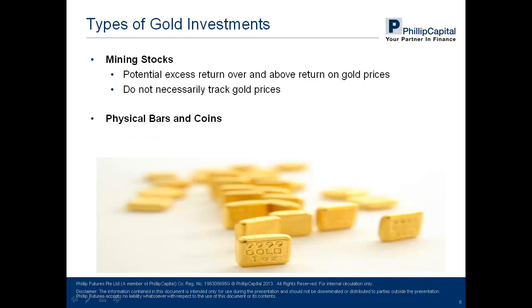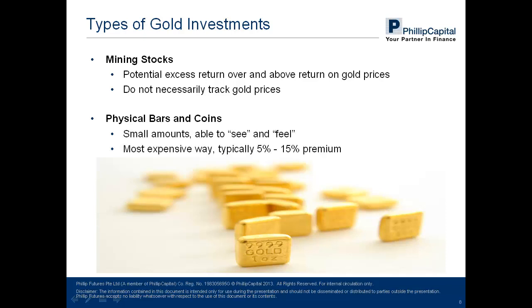Second, and the favourite avenue of investment among Asians, is through ownership of physical bars and coins. They come in small affordable amounts and their tangibility gives investors a sense of security. However, it is actually a very expensive way of owning gold because there is typically a 5–15% premium over the spot gold price. This physical premium also highlights two concerns: that physical gold bars and coins are relatively illiquid and market transparency is lacking. The implication is that investors may not be able to buy or sell the asset without a price penalty.